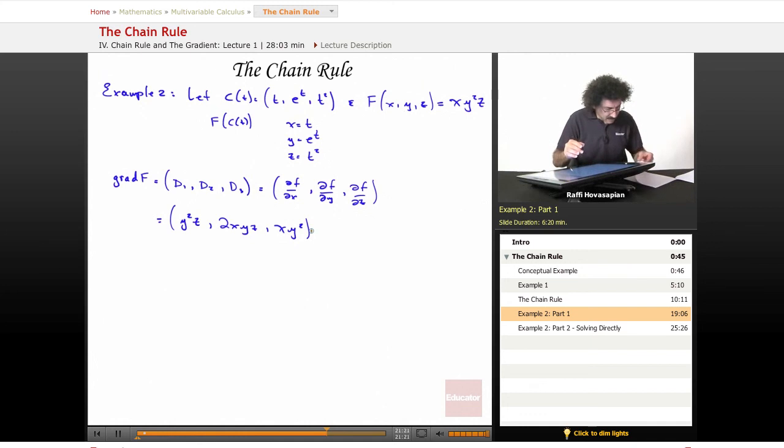Okay. Now, my gradient of f evaluated at C of T. So now we'll take the next step. Now we'll do the grad of f evaluated at C of T, which is the actual expression that's in the definition for the chain rule. Well, all that says is I take my gradient f, this thing, and I just put in the values C of T in here. Well,